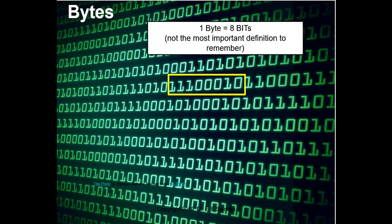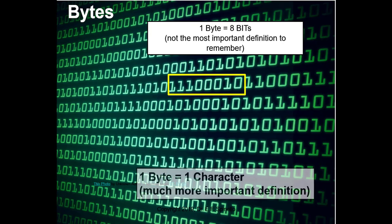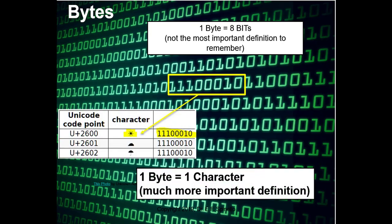Here on the screen I randomly circled a byte: one, one, one, zero, zero, zero, one, zero — eight ones and zeros grouped together, which equates to a character that looks like a little light bulb. You don't need to know that. What's important is that a byte equals eight bits, and a byte equals a character — that's the big one. A byte is equal to a character.